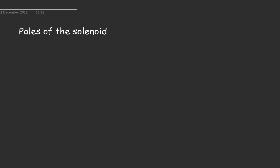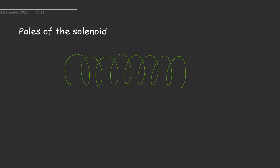Hello and welcome to this video brought to you by Smart Edu Hub Mumbai. In today's video I shall explain how to find the poles of a solenoid. Now a solenoid, as you know, is just a coil of wire — so this in physics will be called a solenoid.